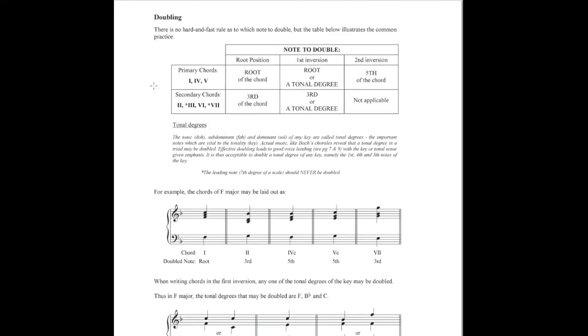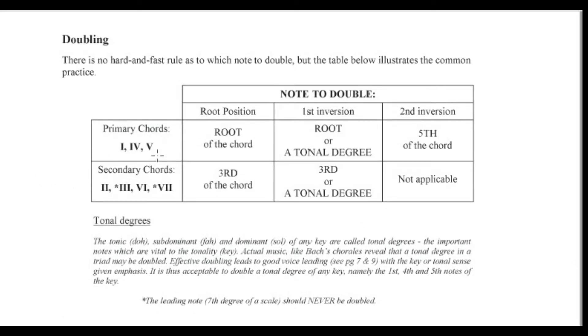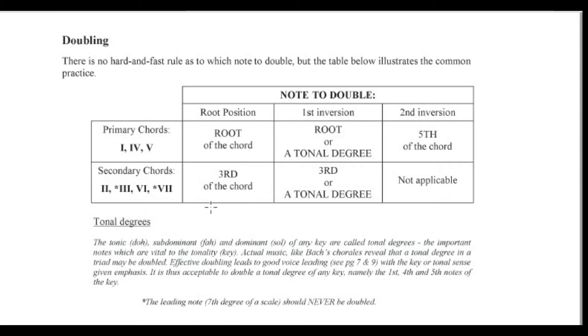So let us look at page 4 in the workbook. When using primary chords 1, 4, and 5, we would double the root note in the root position and the first inversion. These chords are also used in the second inversion, of which we would double the fifth of the chord. For secondary chords like 2, 3, 6, and 7, it is common to double the third of the chord. We usually double the third of the chord in its root and first inversion. The second inversion of these chords are usually not used.